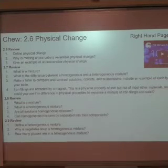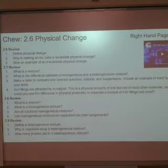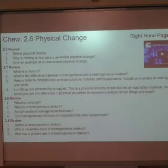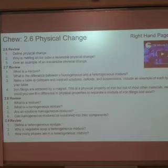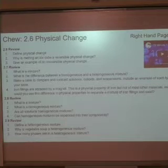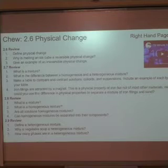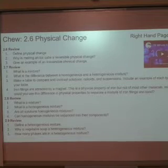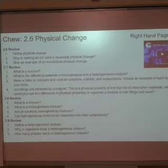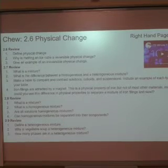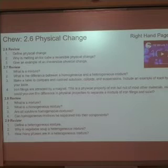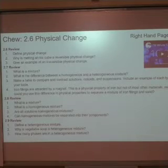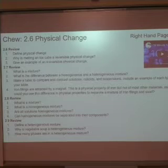Make a table to compare and contrast solutions, colloids, and suspensions. Solutions have the smallest particle size — they do not scatter light and they do not separate or settle. Colloids have particles in the middle — they do not separate or settle, but they do scatter light; they're big enough for light to actually bounce off them. Suspensions have particles so big that they separate or settle out, and they scatter light.